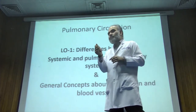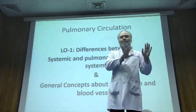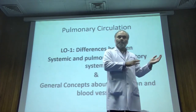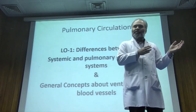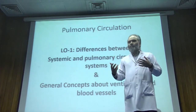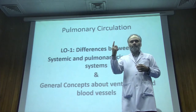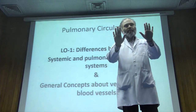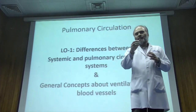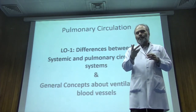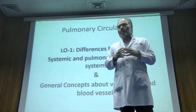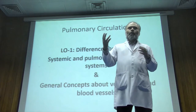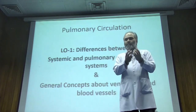Systemic circulation is every circulation other than the lung — the entire body is on one side, called systemic circulation, and the lung is on the other side, called pulmonary circulation. The right side of the heart pumps its entire output into one organ, the lung, while the left pumps its entire output into the rest of the body. Both ventricles have the same cardiac output because they are connected in series.